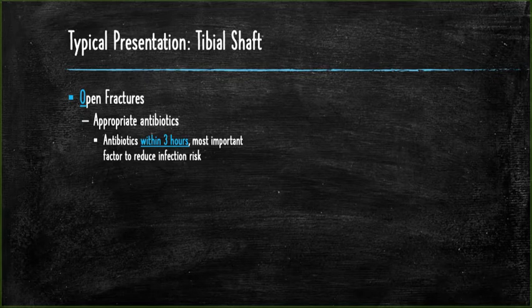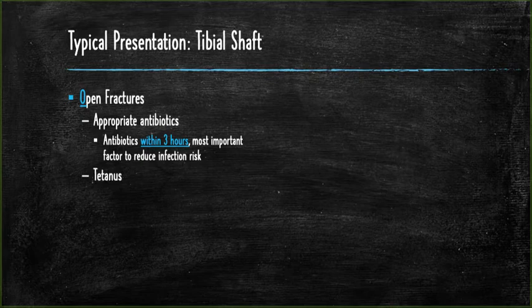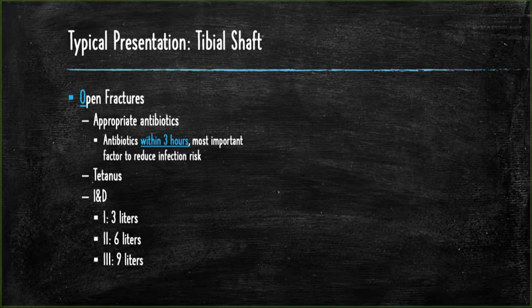When treating someone who sustained an open fracture, you need to make sure that their tetanus is up to date. If their tetanus is not up to date, they need to receive the tetanus vaccine. The open wound should be irrigated with normal saline. Type 1 requires 3 liters of saline, type 2 requires 6 liters, and type 3 requires 9 liters.